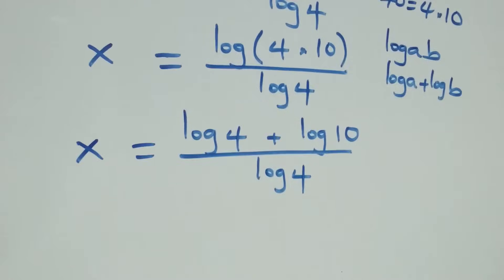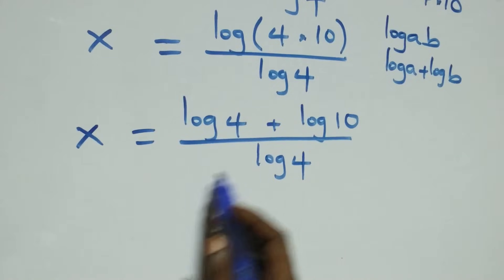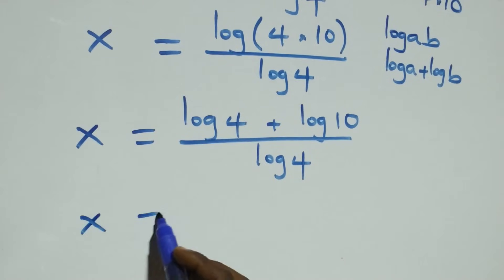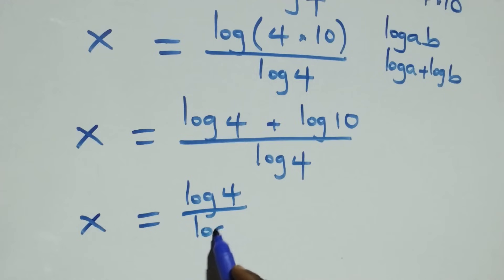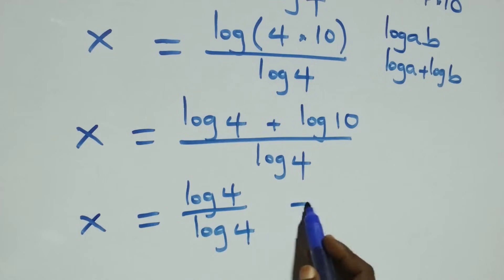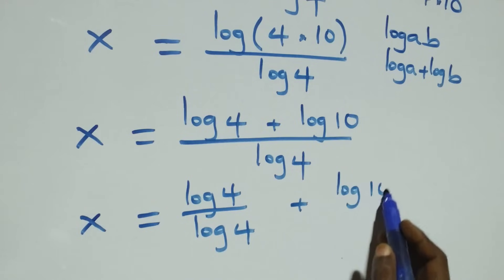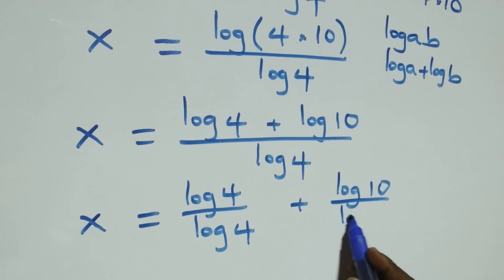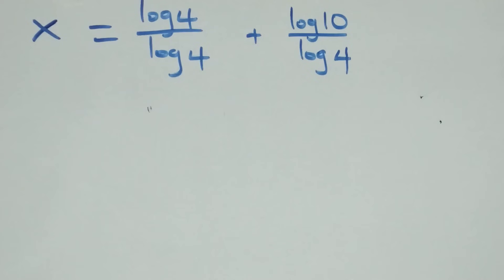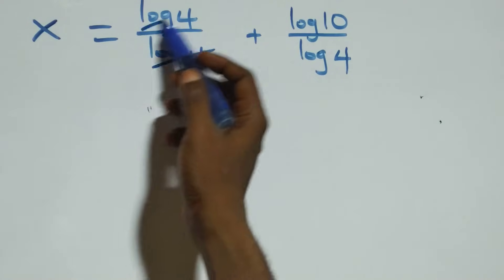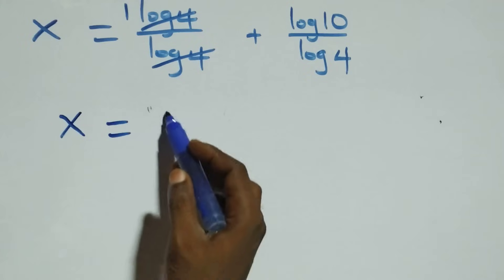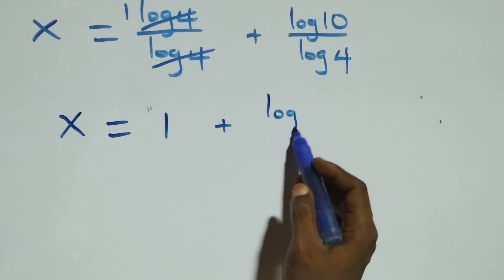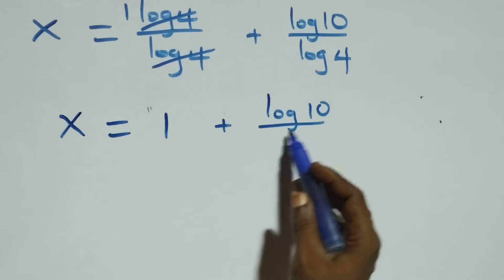The next step is to separate this into two fractions. We have x equals log 4 over log 4 plus log 10 over log 4. Here, log 4 cancels with each other and 1 is left, which implies x equals 1 plus log 10 over log 4.